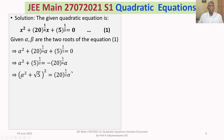Squaring on both sides, we get: alpha squared plus root 5, whole squared, equals minus 1 whole squared, which is plus 1, times 20 to the power of 1 by 4 whole squared, which is 20 to the power of 1 by 2, times alpha squared. And 20 to the power of 1 by 2 is 2 root 5.